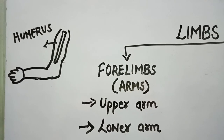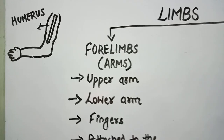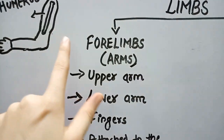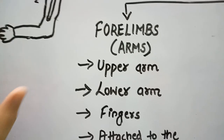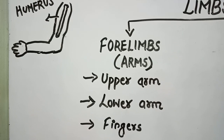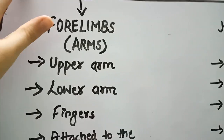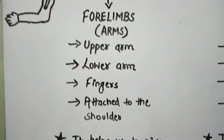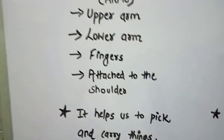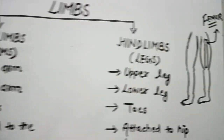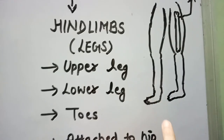First we will discover about forelimbs. In forelimbs we have three parts: upper arm, lower arm, and your fingers — also called the wrist portion. So three parts: upper arm, lower arm, and the fingers portion. Forelimbs are attached to the shoulders, and they help us to pick and carry things.